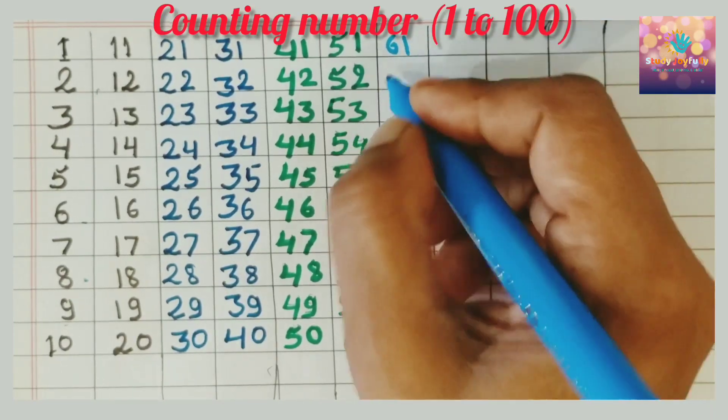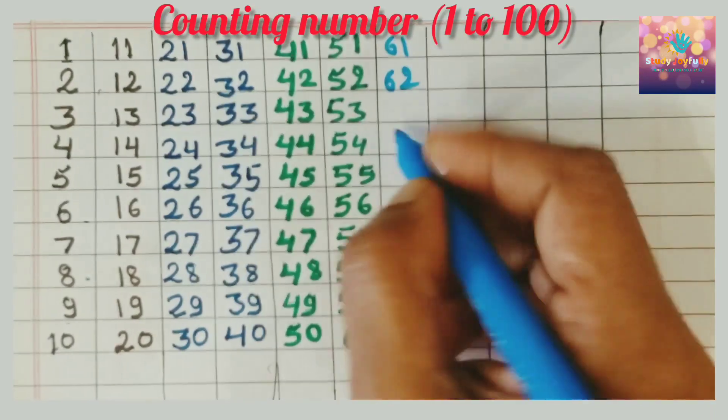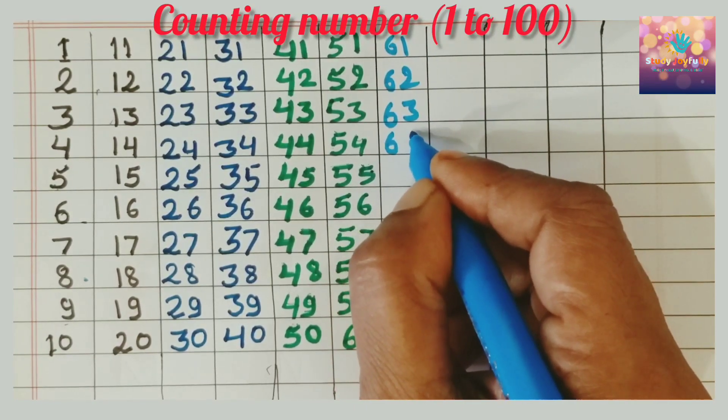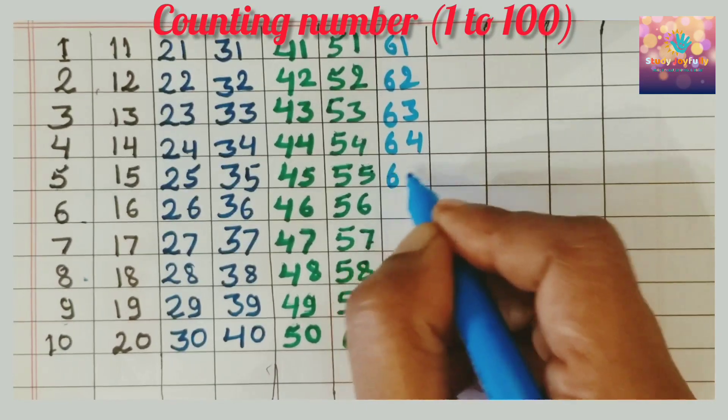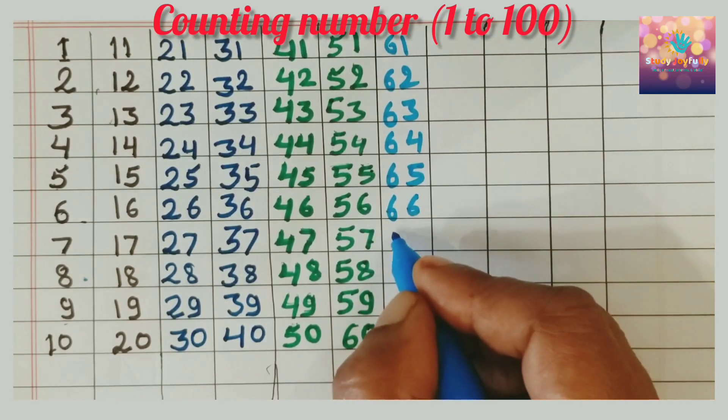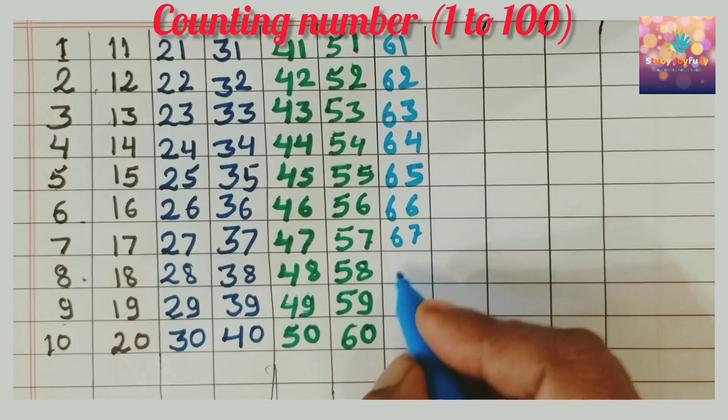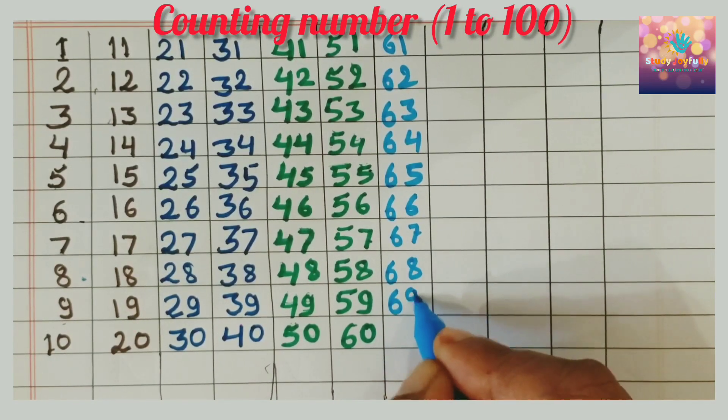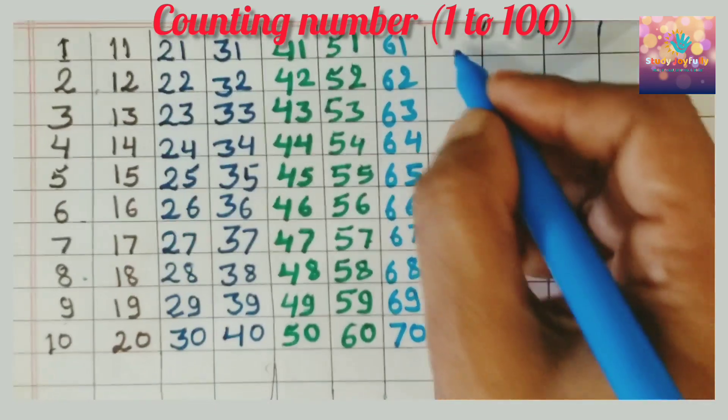6, 1, 61. 6, 2, 62. 6, 3, 63. 6, 4, 64. 6, 5, 65. 6, 6, 66. 6, 7, 67. 6, 8, 68. 6, 9, 69. 7, 0, 70.